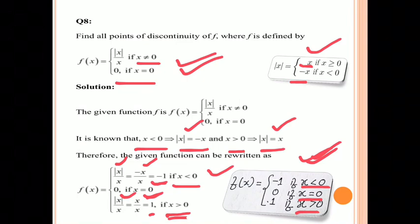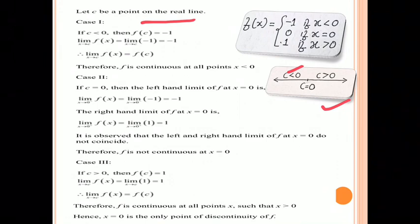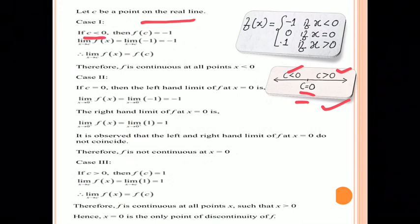We will use this piecewise form to check continuity. Let c be any point on the real line. This divides the real line into three cases: c < 0, c = 0, and c > 0. Case 1: if c is less than 0, f(c) = −1.